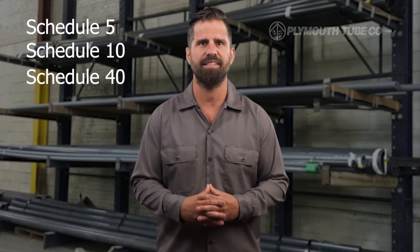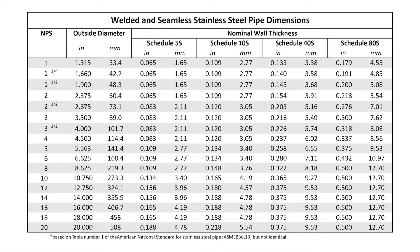Wall thickness is another important factor to consider in pipe sizing. In addition to standardizing the nominal OD, a standard wall thickness is labeled as a schedule or SCH. Common pipe schedules are schedule 5, schedule 10, schedule 40, and schedule 80. Special schedule and net wall thicknesses can be ordered for custom requirements. Pipe wall is often related to the pressure it can hold. The units for both NPS and SCH are dimensionless. The higher the schedule reference number, the heavier the pipe wall thickness, which means the pipe can withstand higher pressure.